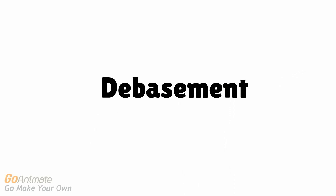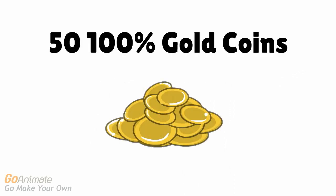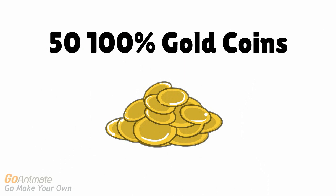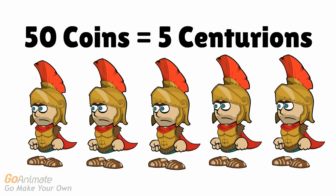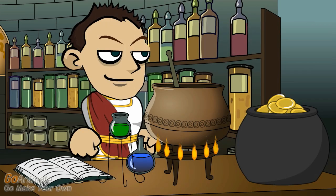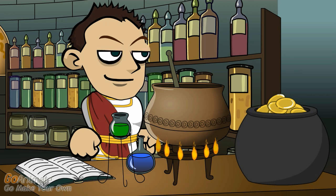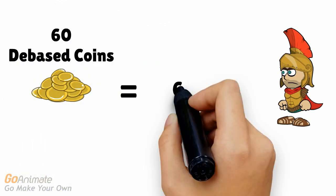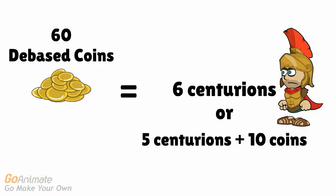Let's see how this works. Let's say the Roman government originally collected 50 100% pure gold coins in taxes. They could use these 50 gold coins to pay for 5 centurions for a month. But the government instead took these coins, melted them down, and mixed them with cheaper metals. They can now mint 60 debased gold coins. The Roman government is now 10 coins richer — they can now pay for 6 centurions, or if they prefer, they can pay for 5 and keep 10 coins for themselves.